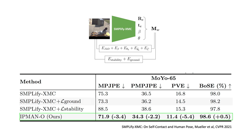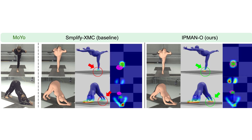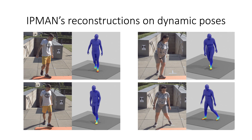Our optimization-based method, IPMAN-O, is based on SMPLify-XMC with the addition of intuitive physics terms. IPMAN-O also improves upon SMPLify-XMC on all evaluation metrics. Qualitatively, the results of both SMPLify-XMC and IPMAN-O look good when projected into the image, but another view reveals that our results are more stable and physically plausible with respect to the ground plane.